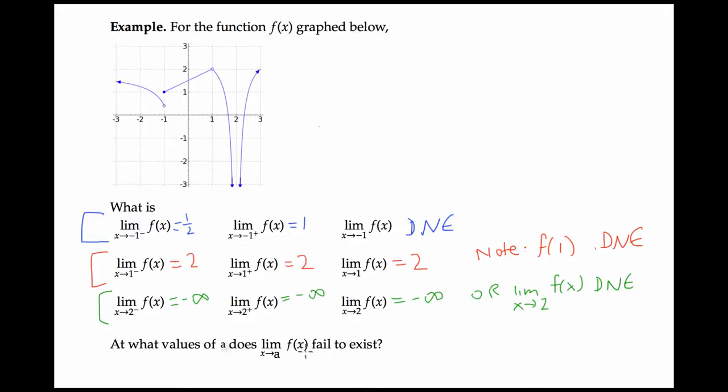What values of x does the limit of f(x) fail to exist? Well, let's see. Negative 1 and 2 are the only two values.